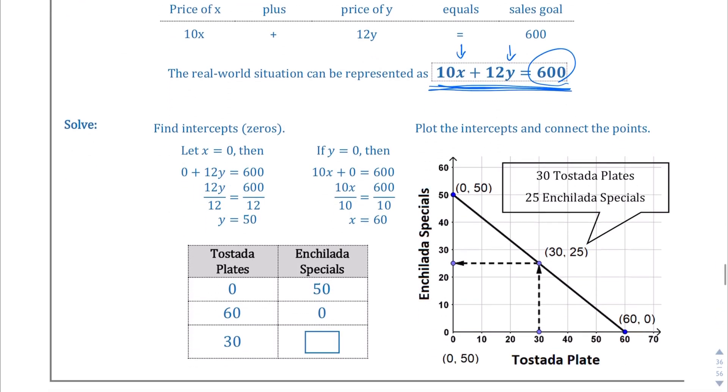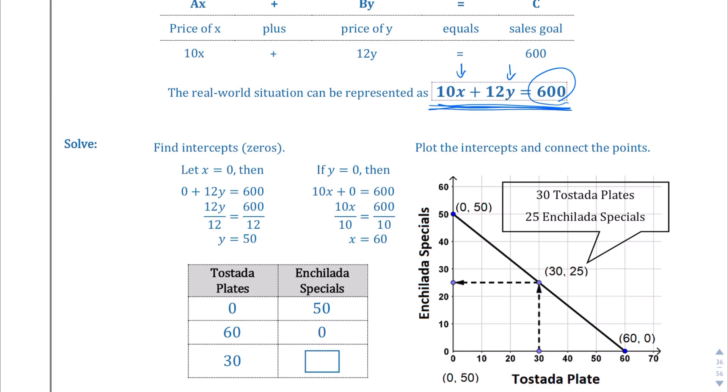And then, in order for us to solve this and figure out how many of each plate you should sell to reach that $600 goal, we want to find the zeros. We did that in the previous section. So we're doing that here. We're going to find the zero for X and then the zero for Y. And then they do all the work for you. So in order for us to reach that $600 limit, if we sell zero tostada plates, we need to sell 50 enchilada specials. And the opposite is true.